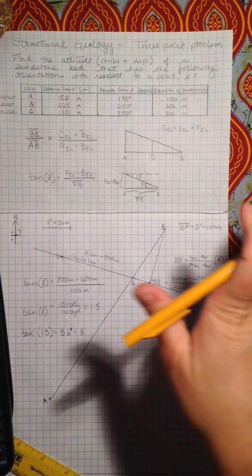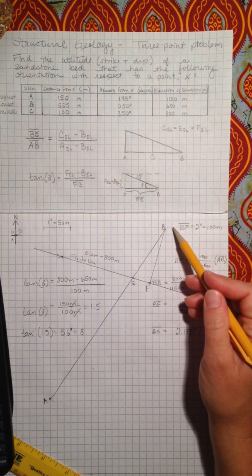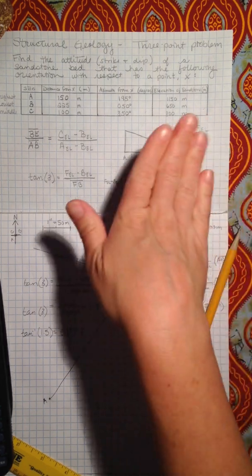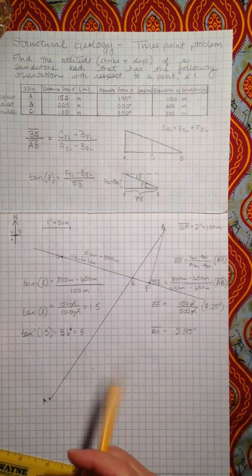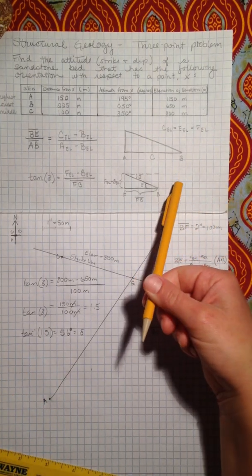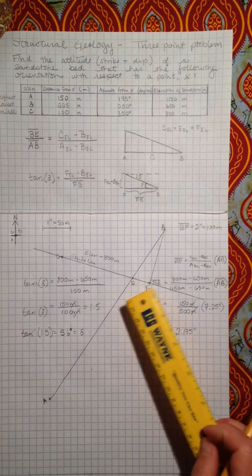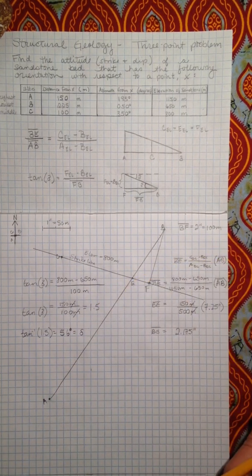And I know that it's dipping to the northeast, right? It's dipping from F to B to the northeast at 56 degrees. So now, now that I know that my dip is like this, my strike is like this, I'm going to go ahead and find that orientation of the strike.